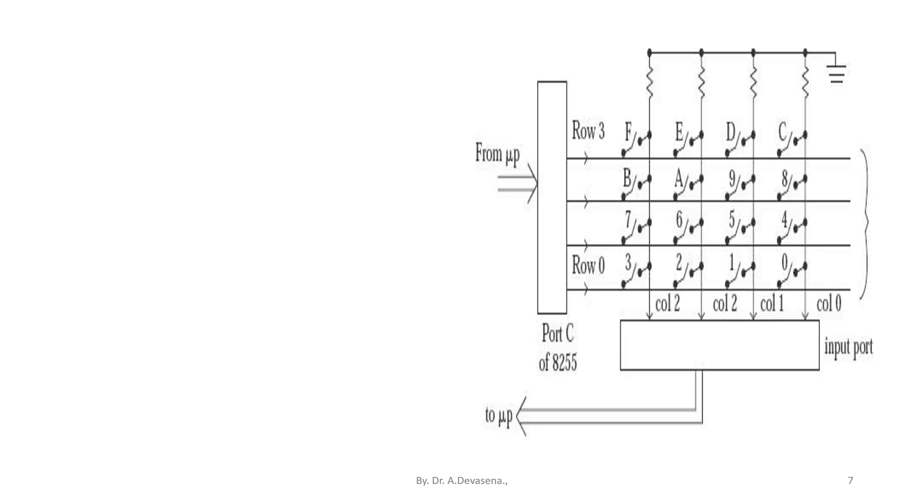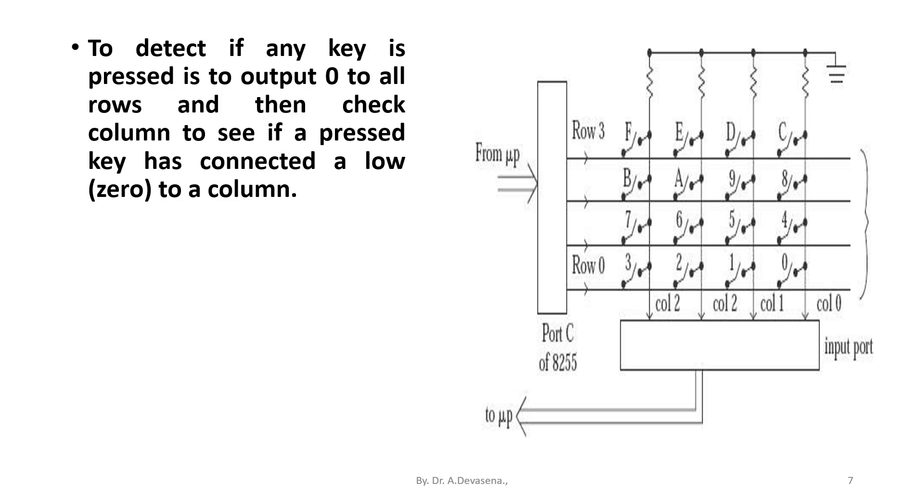To detect if any key is pressed is to output 0 to all rows and then check columns to see if a pressed key has connected a row to a column. Once the columns are found to be all high, the program enters another loop which waits until a low appears on one of the columns, indicating a key press.